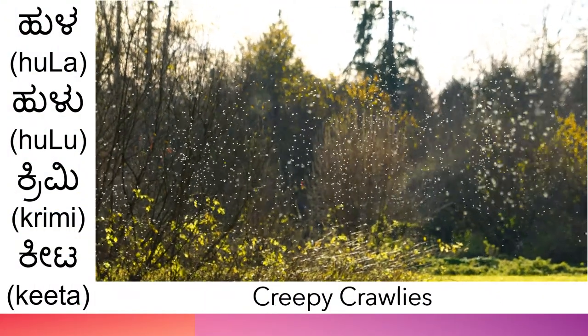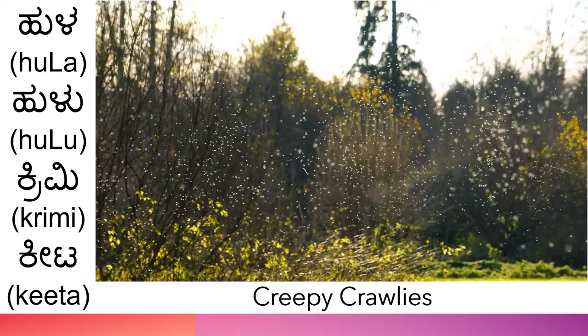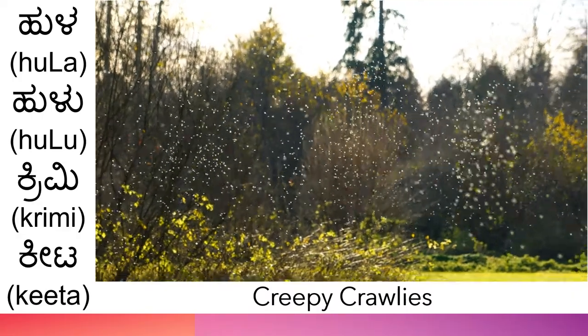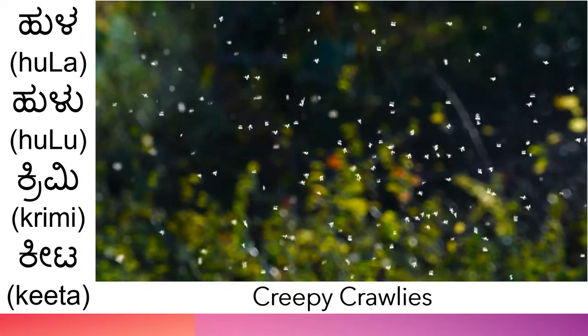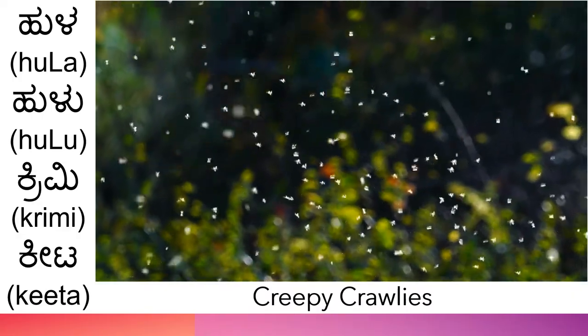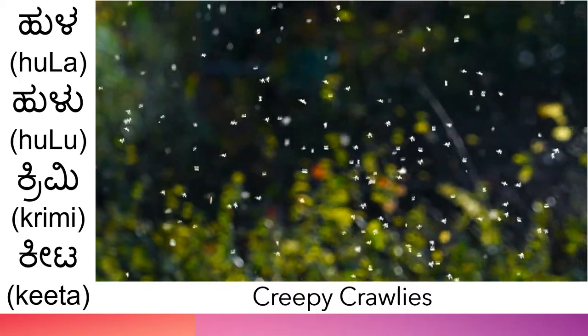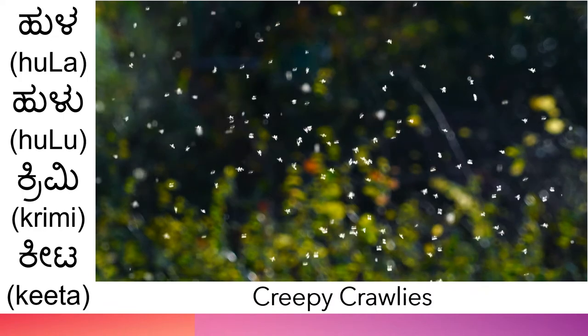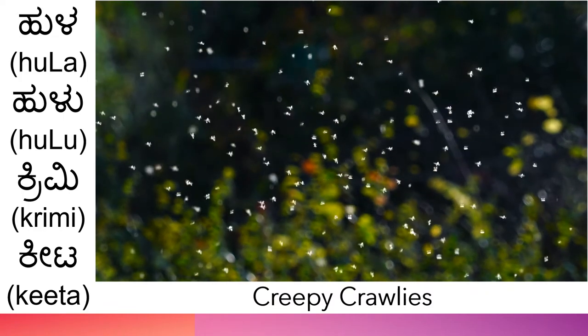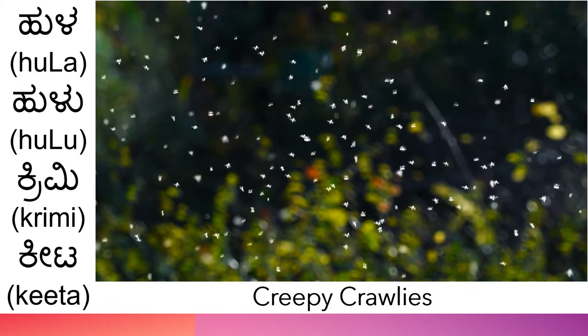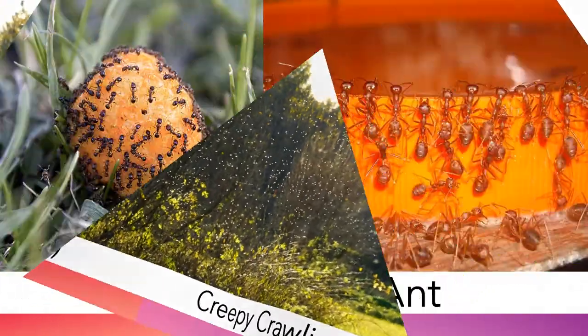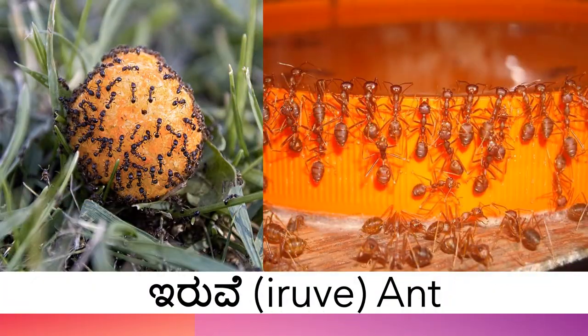Different names for creepy crawlies in Kannada are: Hula, Hulu, Creamy, Keeta. Now let's learn the names of insects and other creepy crawlies in Kannada.